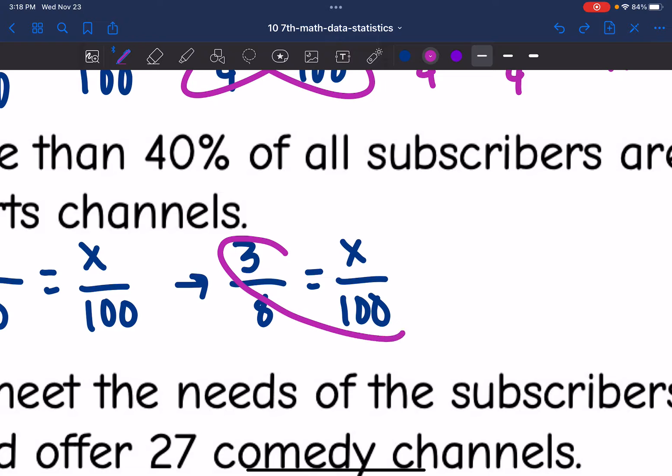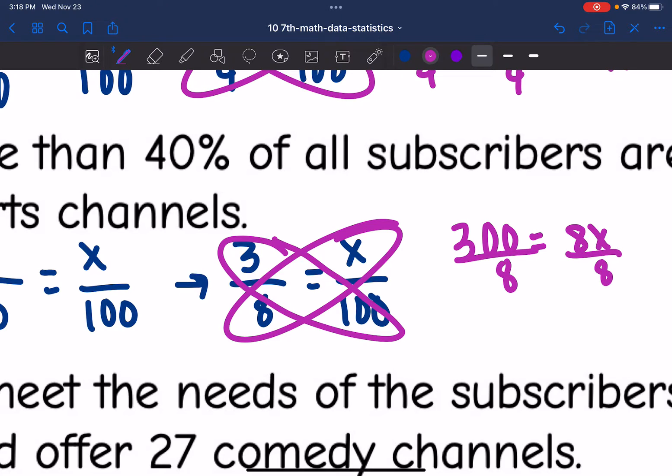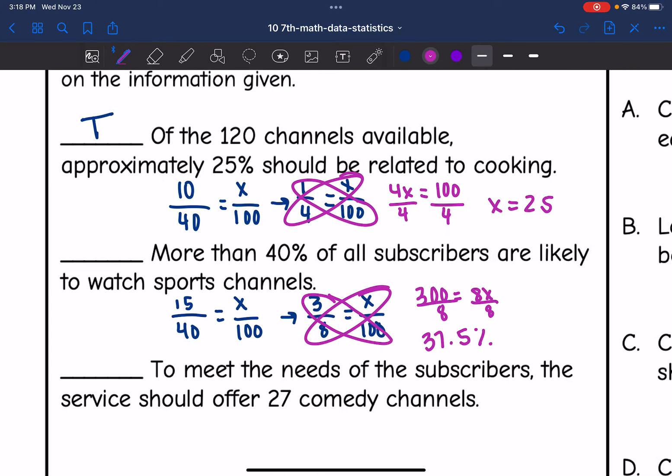3 times 100 is 300. And 8 times x is 8x. And then I would divide by 8. And 300 divided by 8 is 37.5%. So I would not say that more than 40% of subscribers are likely to watch sports channels. Based on this percentage, it is less. So this one is false.